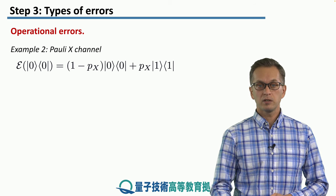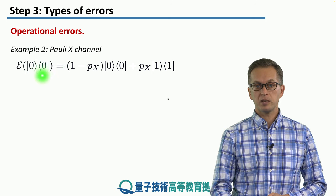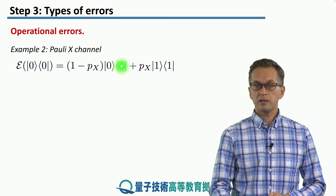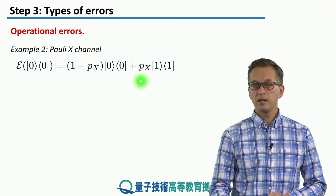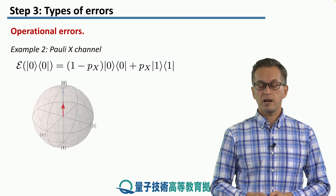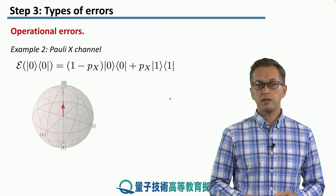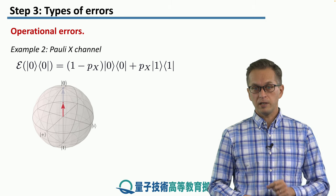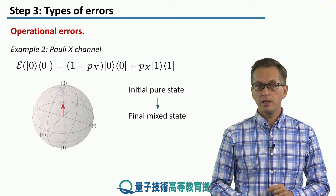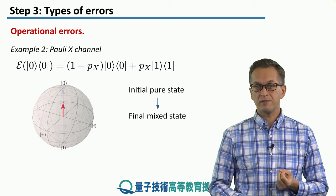Let's see how it works with an example. We start again with state zero, given in the outer product representation as ket 0 times bra 0. We apply the Pauli X channel: the first term is where our state is unaffected with probability 1 minus px, and with probability px we apply the X channel — we just flip our zeros into ones. On the Bloch sphere, starting from state zero, after applying the Pauli X channel, the state moves along the z-axis towards the center of the sphere. Crucially, with incoherent errors, even if you start with a pure state, your output state is generally a mixed state.